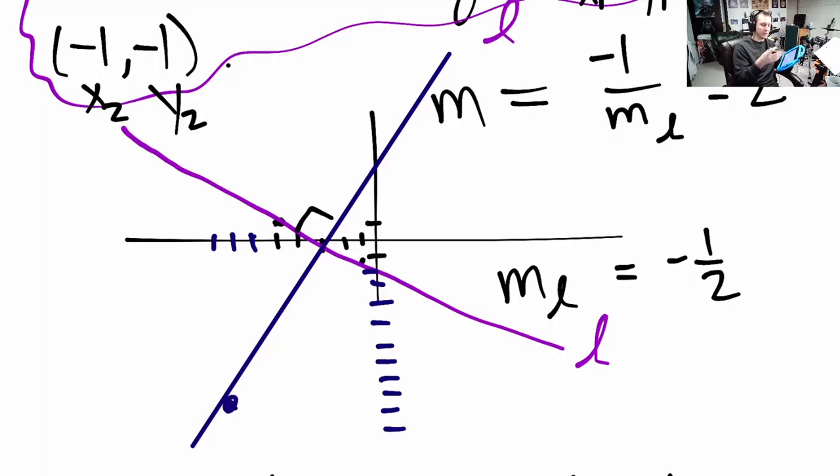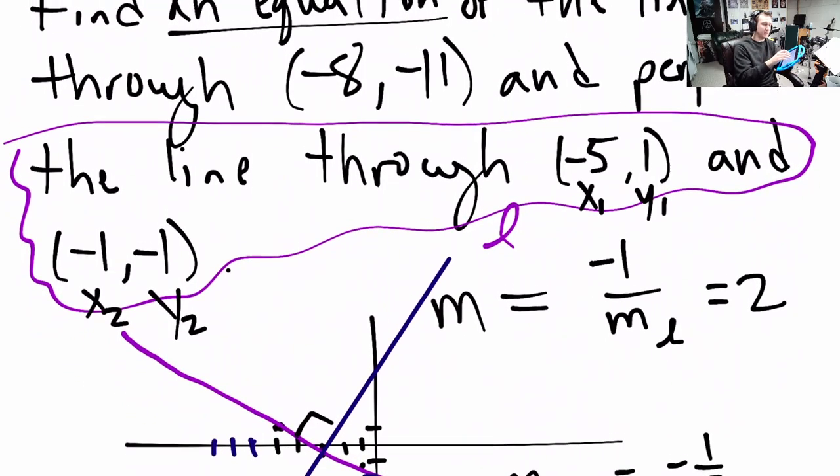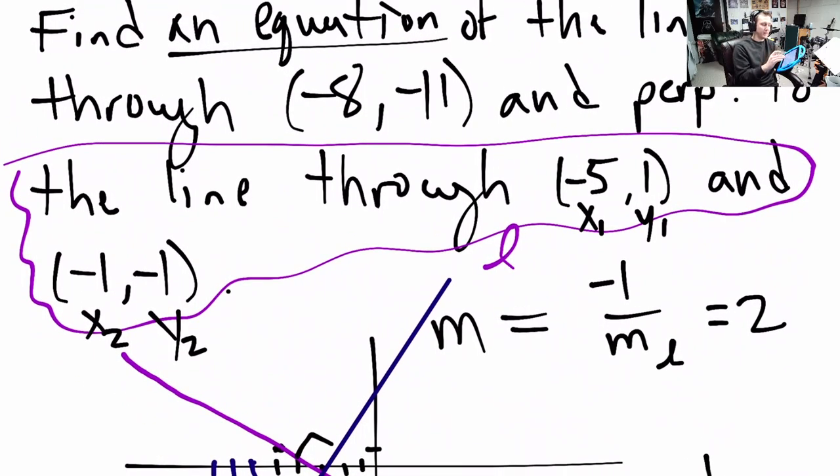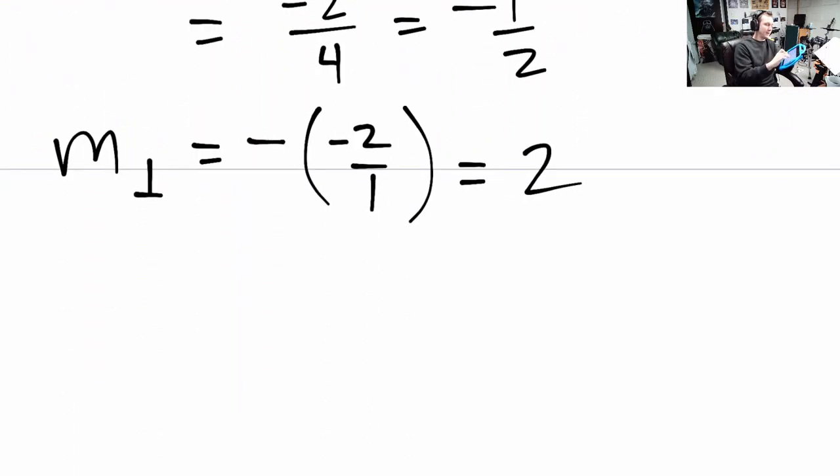Now, the next point that we're going to make is we just need to find this. We need to find an equation and we know this point here. We know that it goes through the point negative 8, negative 11. So, let's see if we can use that. We remember I hope this point x1, y1 slope form.